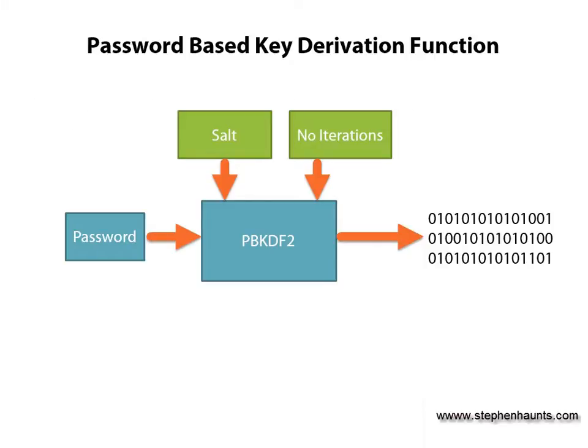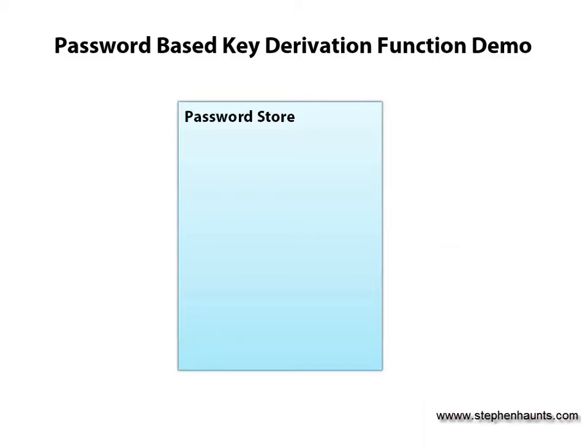The password based key derivation function is similar to a hash function to use. You have to provide it with an initial password to hash as well as a salt, except you do not pre-combine the password and the salt as before. You also have to provide a number of iterations parameter. This parameter tells the algorithm how many times to execute before returning the hashed password. It is this number of iterations parameter that allows you to algorithmically slow down the key generation and help guard against a rainbow table attack. In a moment, we will look at some demo code where we store some usernames and passwords using the password based key derivation function, and then test authenticating the user using those passwords.